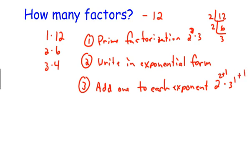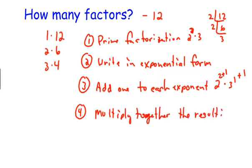Then your last step—and this tells you exactly how many factors there are—multiply together the resulting sums. So in this case you get 3 times 2, which is 6, which was the answer.